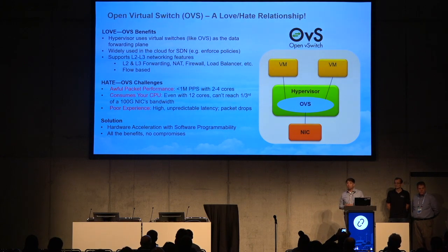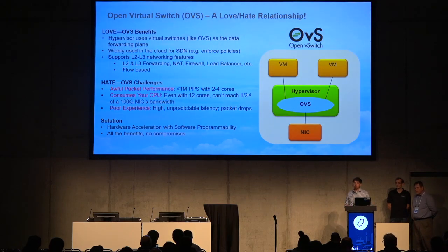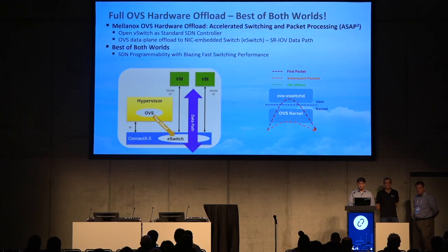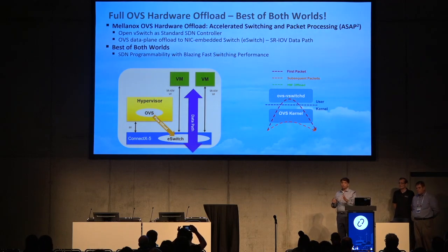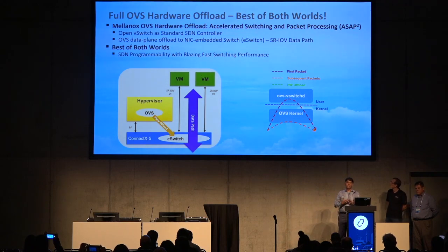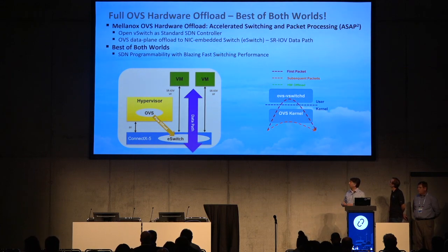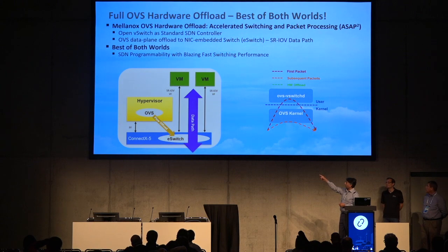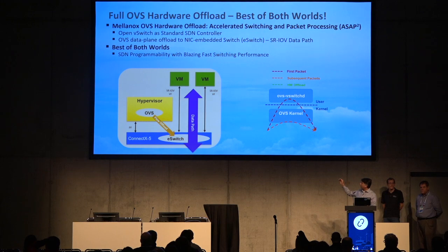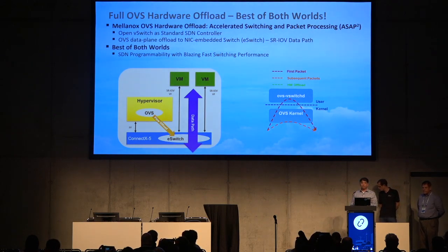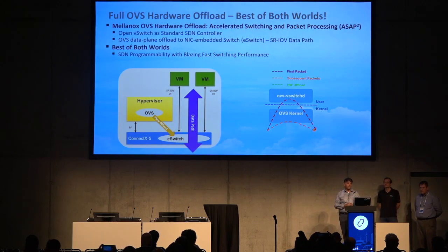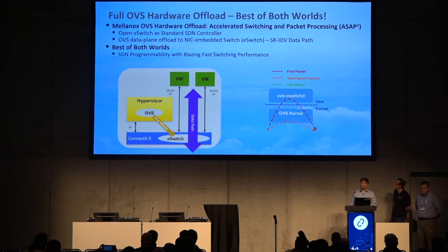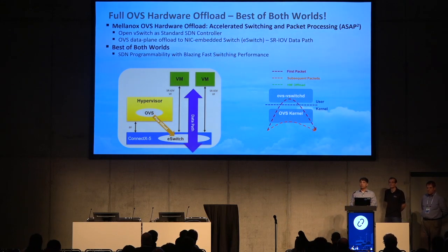Today's talk is about how we accelerate a key component like OVS — open virtual switch — though it could also be applied to other virtual switches and routers. We offload the flows from OVS into an e-switch of the NIC. In an OVS offload world, OVS acts as a standard SDN controller, and the OVS data plane is offloaded to the NIC-embedded e-switch using SR-IOV for the data path. The data path is really fast but also programmable because you're offloading OVS rules into the e-switch.